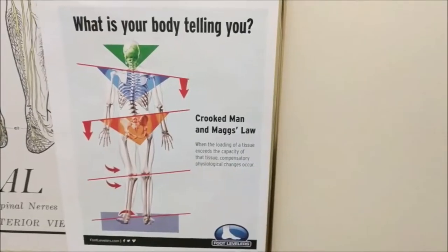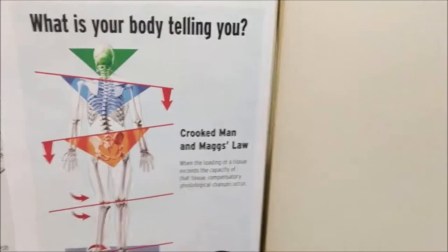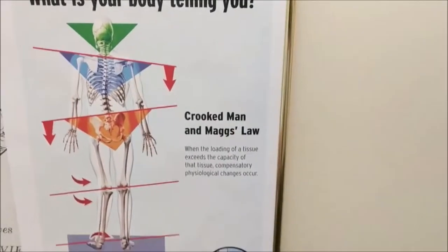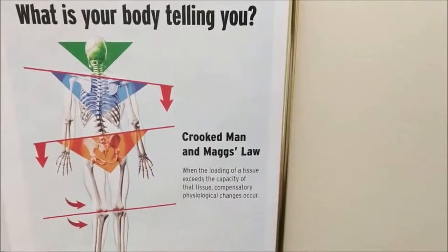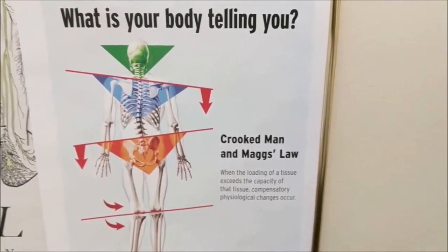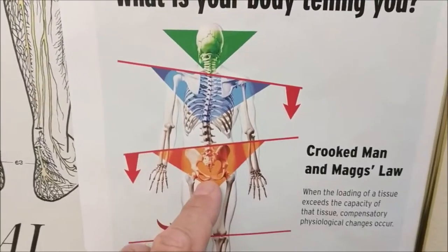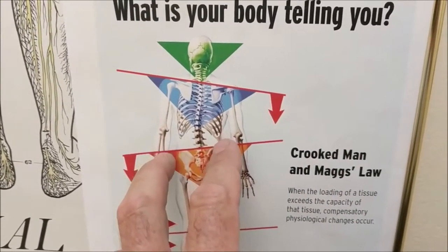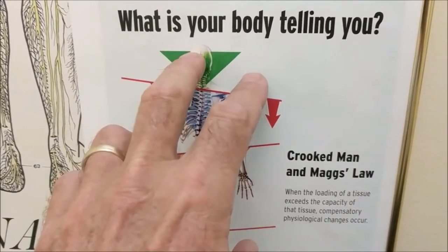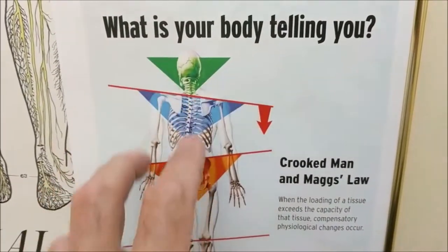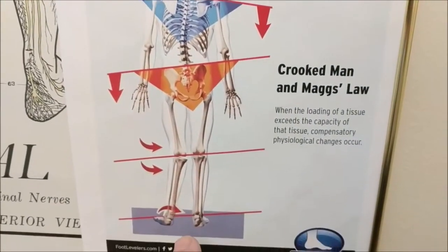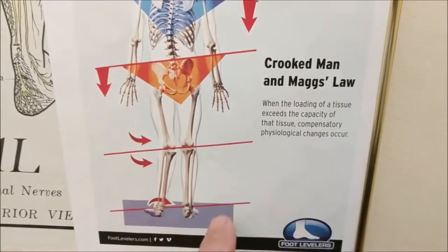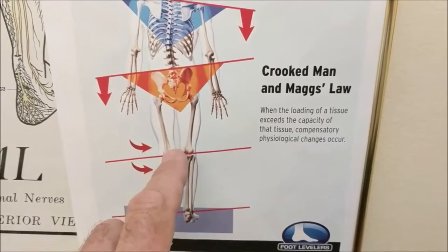Another biggie is the foundation. Let me show you what I mean. This is called Crooked Man, and all of us are Crooked Man to one degree or another. One of the things we have found out is most of the problems happening through the upper body usually have a foundational component in the feet or in the legs.